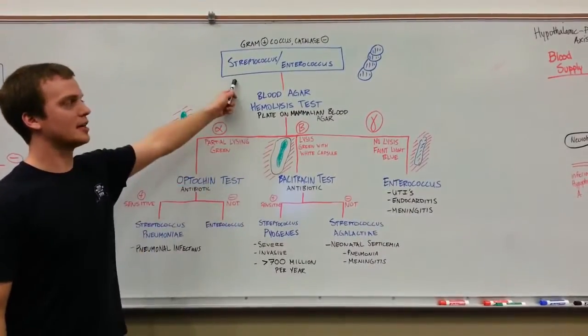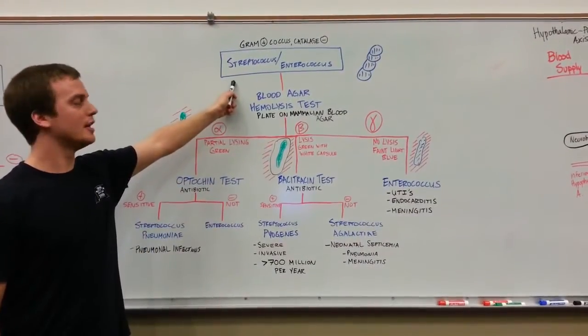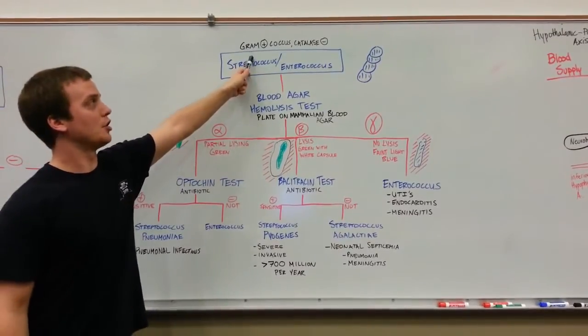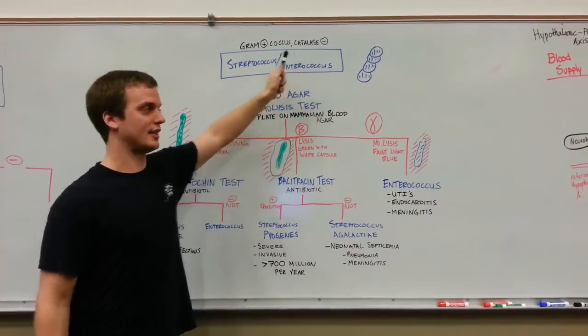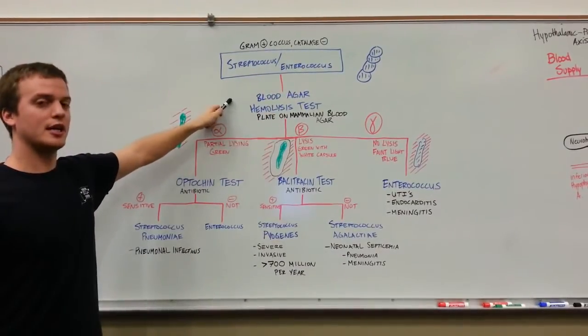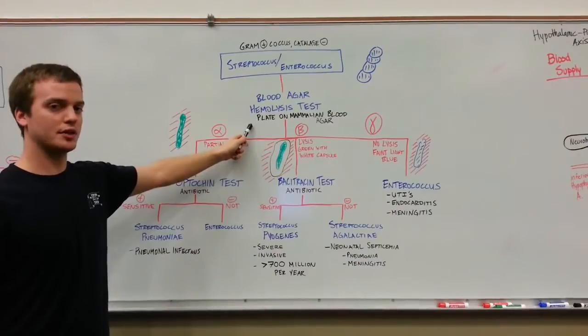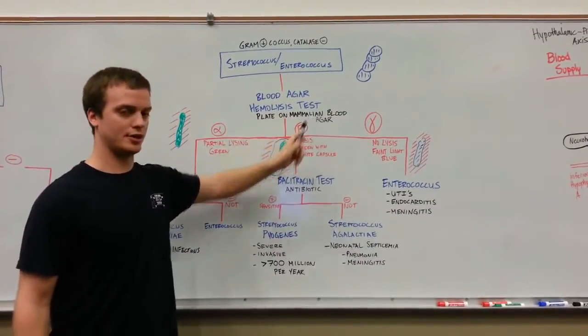To further classify streptococcus or enterococcus bacteria - these are gram positive cocci that are catalase negative - we'll perform a blood agar hemolysis test. This is where you plate the organism on a mammalian blood agar plate.